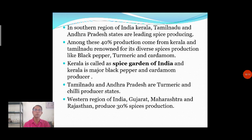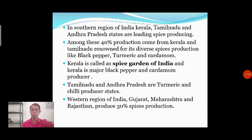The western region of India — Gujarat, Maharashtra, and Rajasthan — produces 30% of the spice production. The southern part of India produces 40%, the western region produces 30%, and the remaining 30% is produced from the northern part of the country, including Jammu & Kashmir, parts of Rajasthan, and Himachal Pradesh. We will stop here in today's lecture and continue this topic on spice production in India in the upcoming lecture.